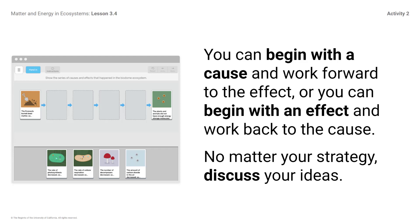If I choose to start with the last effect, I might say to my partner: why did the plants and animals not have enough energy storage molecules? Remember that this is the question we started with in Chapter 1, so my partner and I will want to retrace our steps. The questions and key concepts posted on the wall might be a good guide to use if I work back to the last effect.